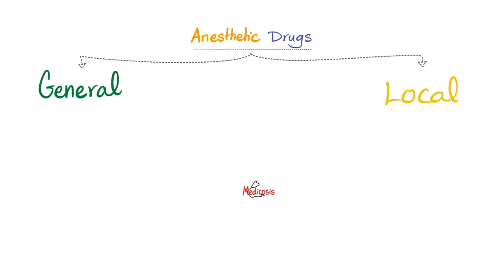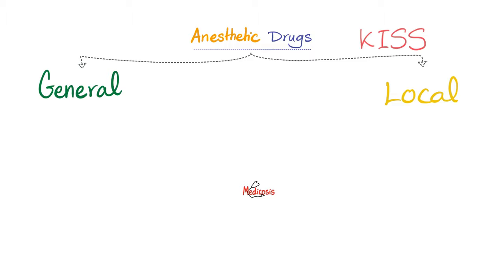Anesthetics are either general or local — there is also regional, but let's keep it simple. General anesthetics are usually pro-GABA, and GABA is inhibitory, so they knock you unconscious. Local anesthetics are inhibitors of sodium channels — they block sodium channels, which were responsible for depolarization and activation. When you give local anesthetics, sodium channels will not work, and you end up with inhibition.